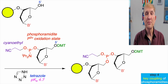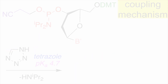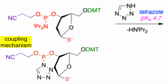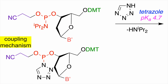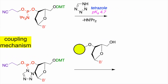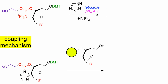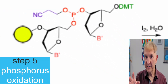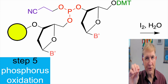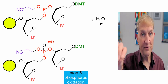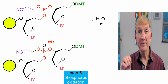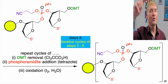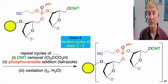That coupling is mediated by a very mild acid, tetrazole. After the coupling, that linkage is not particularly stable — it's a phosphorus 3 oxidation state — so it's oxidized to phosphorus 5, maybe by iodine in water, which makes it more stable. Then the DMT group is removed once again, and the cycle is repeated in the order in which you need the DNA sequence, from 3' to 5'.